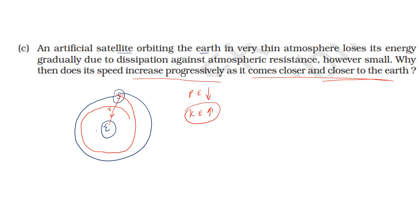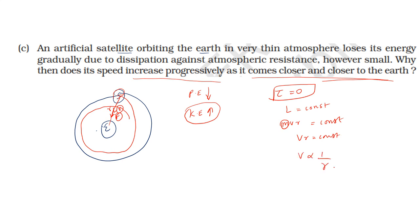The force on the satellite acts in the same direction as its motion. Angular momentum m v r is equal to a constant. As the satellite descends, potential energy decreases and kinetic energy increases. The total energy decreases due to energy loss from friction with the air, but speed increases as potential energy converts to kinetic energy.